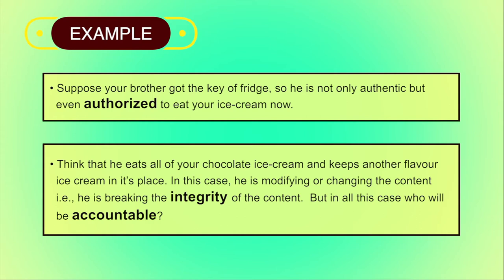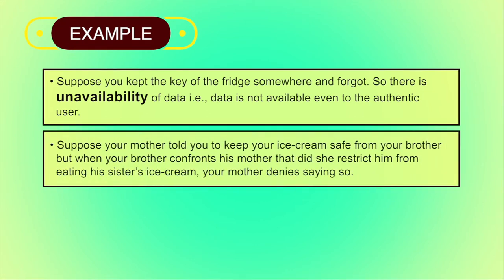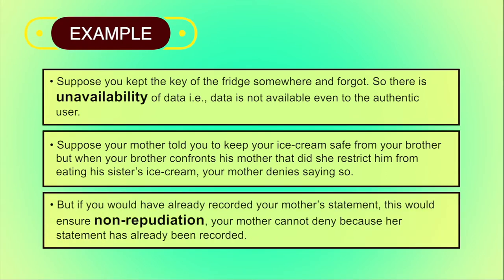But in all this, who will be accountable? Of course, you — as you were supposed to keep the key of the fridge safely. Then suppose you kept the key of the fridge somewhere and forgot, so there is unavailability of data — data is not available even to the authentic user. Now suppose your mother told you to keep your ice cream safe from your brother, but when your brother asks his mother whether she restricted him from eating his sister's ice cream and your mother denies saying so — if you had already recorded your mother's statement, this would ensure non-repudiation. In that case, your mother could not deny because her statement has already been recorded. I hope this clears all the objectives of information security.